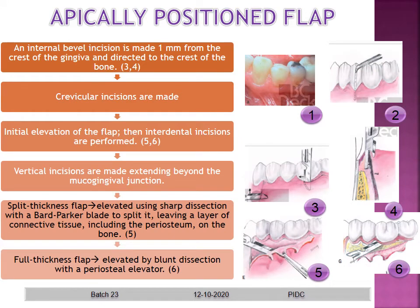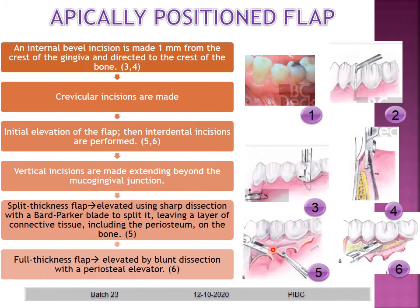The second procedure is the apically positioned flap. Before going into the procedure, review the classification of flaps and the introduction to periodontal surgery classes. An internal bevel incision is made just 1 mm from the crest of the gingiva directed to the underlying crest of bone, followed by a crevicular incision, initial elevation of the flap, and then interdental incisions. Vertical incisions can be made beyond the mucogingival junction if needed. For a split-thickness flap, a sharp blade is used to split the flap leaving a layer of connective tissue on the periosteum and bone.